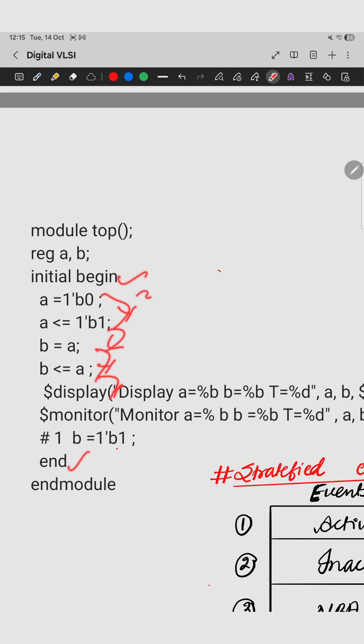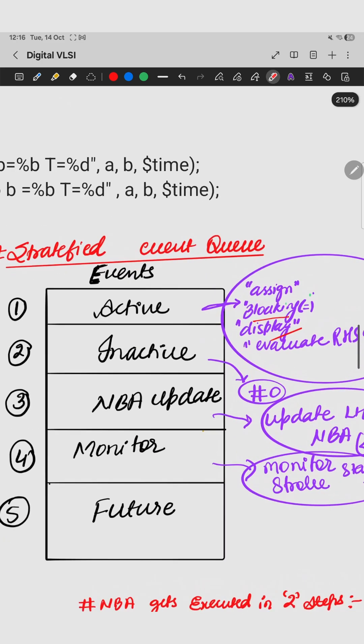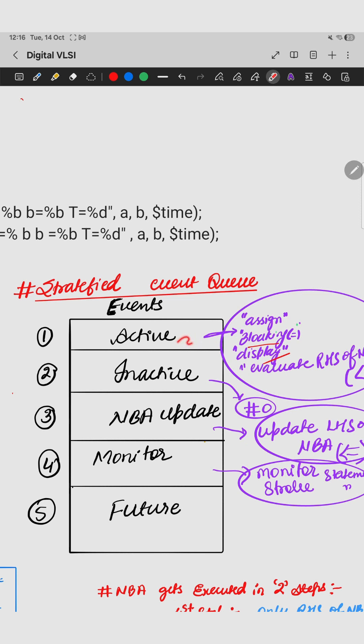In this begin and end block, these will be executed sequentially. Now let us understand this table. What is this? This is a stratified event queue, and we should solve these types of questions if they are in the same time slot. There are actually standard solutions which mention about these types, and we should follow only this type.